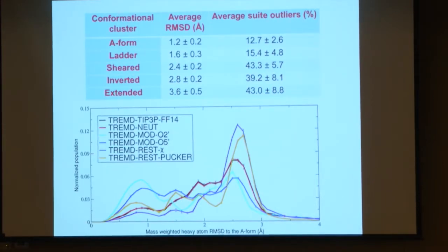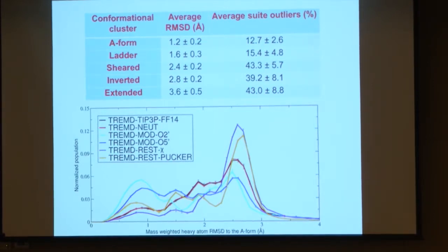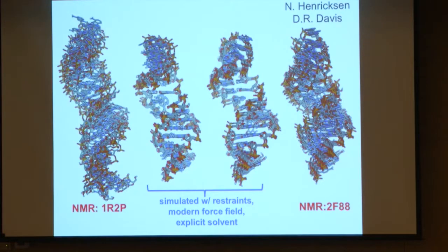The plot below shows a population histogram of conformations a certain distance away from an A-form reference. We can make various changes in the force field — like changing the size of the phosphate oxygens or sugar pucker parameters — and see how the distributions shift.